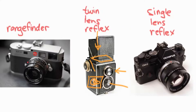You're looking down and you can see what this lens can see, which is in theory about the same thing as the lens on the bottom. That's a twin lens reflex.